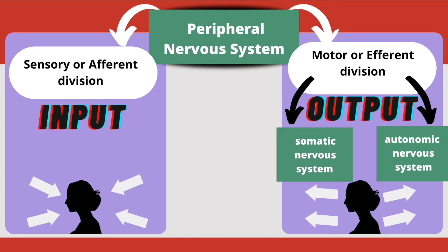If we talk about the further subdivision of the peripheral nervous system, specifically the motor or efferent division, it includes the somatic nervous system and the autonomic nervous system. The motor or efferent division is only responsible for taking the response from the central nervous system to the effector organ; it has no role in collecting sensory information.